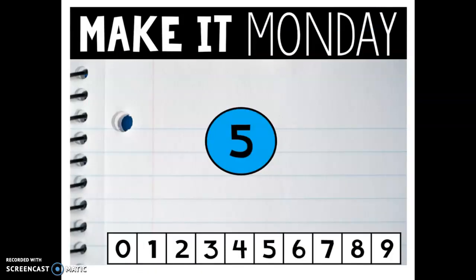So for example, today's Make it Monday is with the number five. Our numbers down here are zero through nine and we're going to use these numbers to either join two of the numbers together or take away and subtract to create the number five. So let's get started.